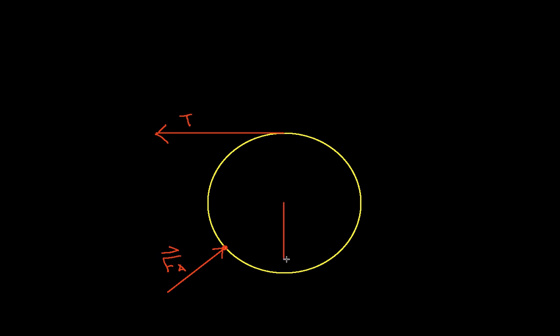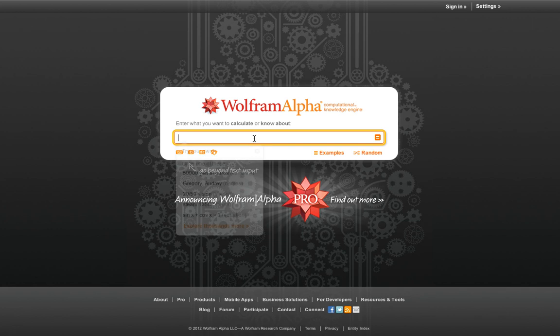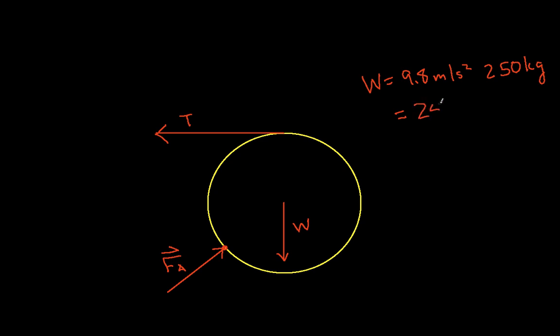We also have the weight of the barrel, which goes from its center downward. We know its direction, but not its magnitude. The weight is 9.8 meters per second squared times 250 kilograms, which equals 2,450 Newtons.